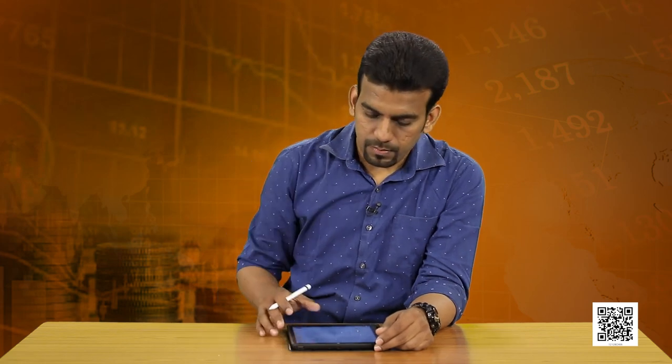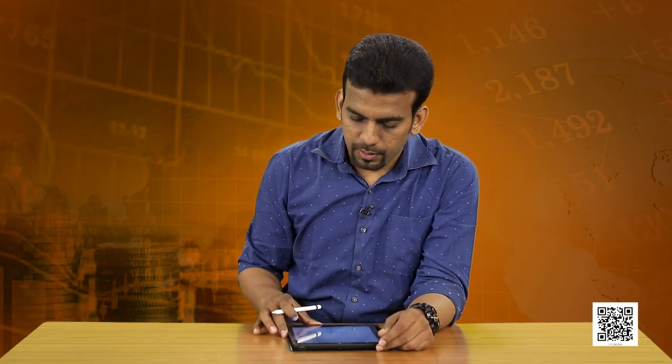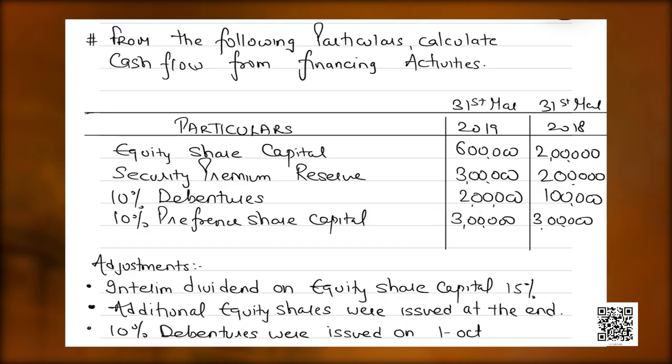Let us understand cash flow from financing activity by an example. Here on your screen, you can see equity share capital has increased from 2 lakh to 6 lakh, security premium reserve from 2 lakh to 3 lakh, debentures have increased from 1 lakh to 2 lakh, and preference share capital is the same.